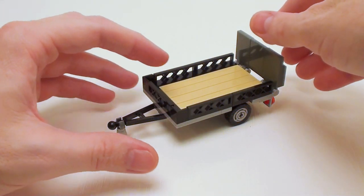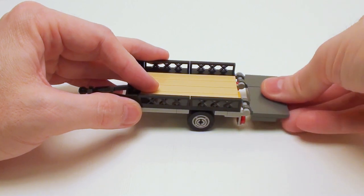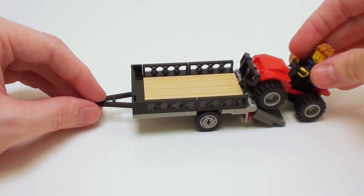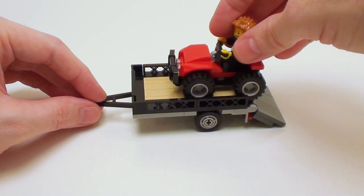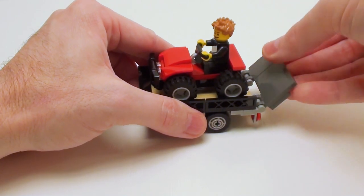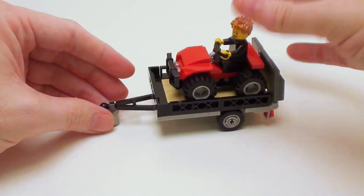There is our utility trailer. So we'll lower down the back. We're going to have Jay the Surfer drive his ATV up into the trailer. We'll just close the back portion so now it doesn't fall out.